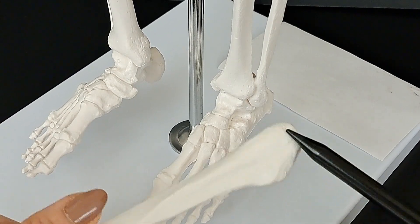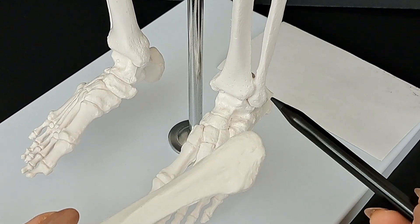This is the lateral malleolus, which is the outer aspect of the fibula, as we can see right here.